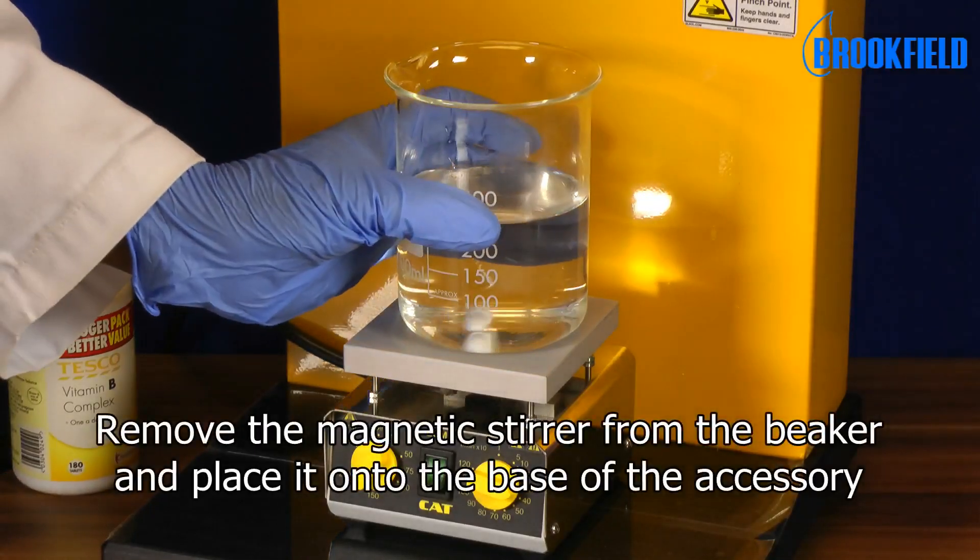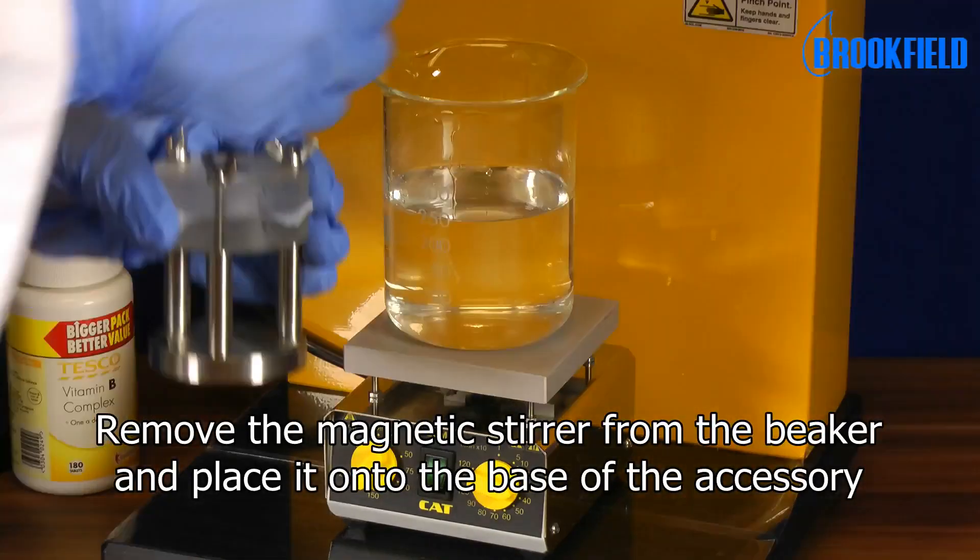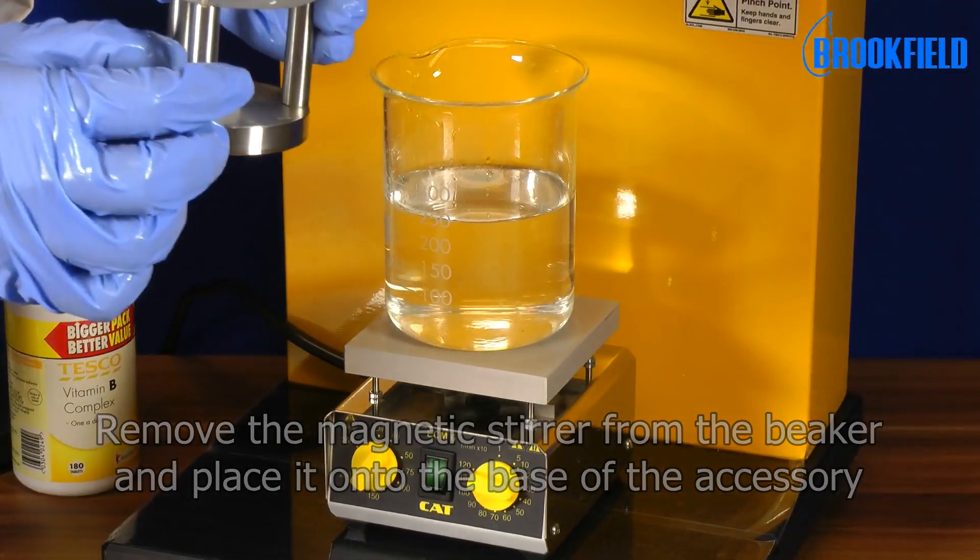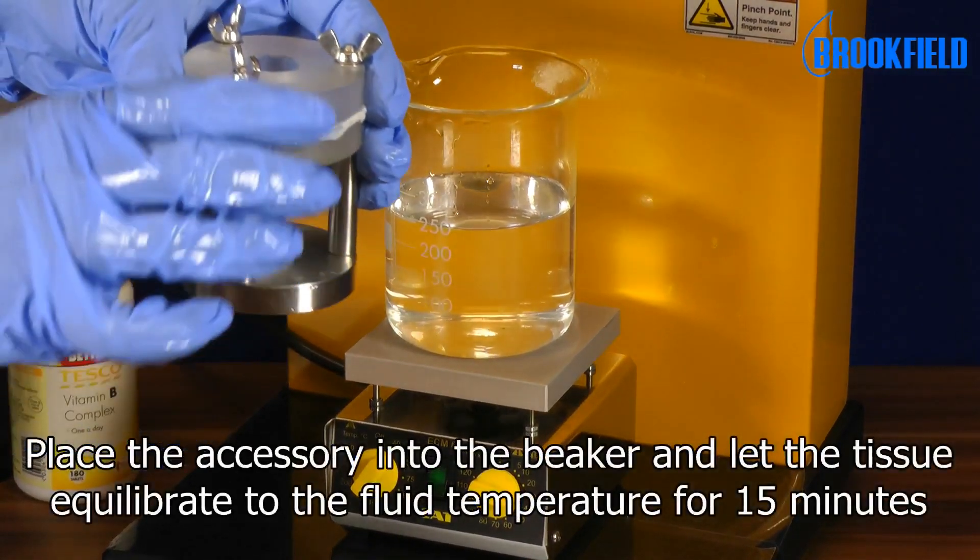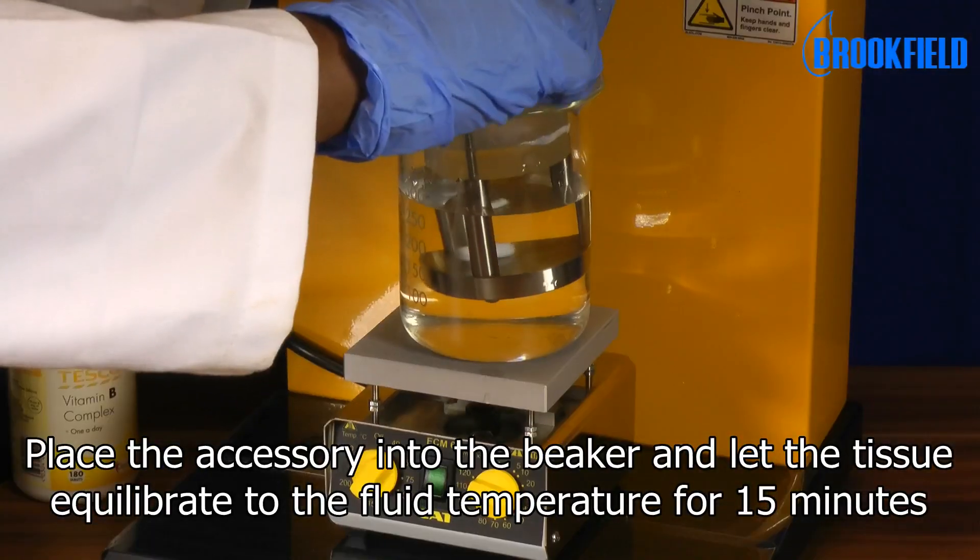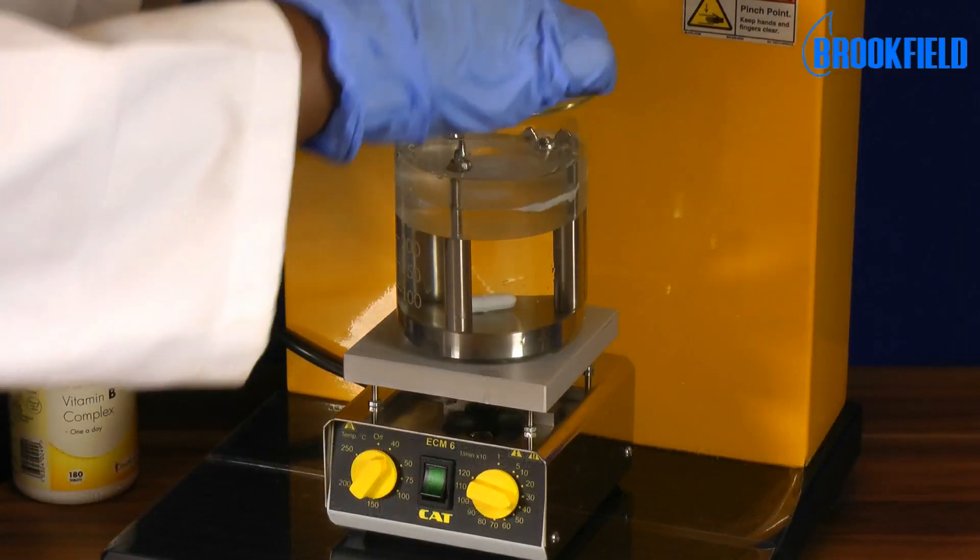Remove the magnetic stirrer from the beaker and place it onto the base of the accessory. Place the accessory into the beaker and let the tissue equilibrate to the fluid temperature for 15 minutes.